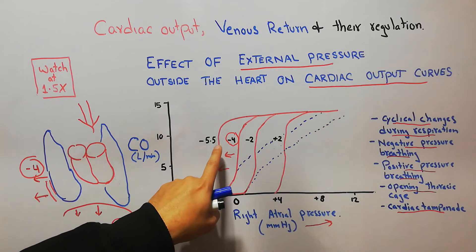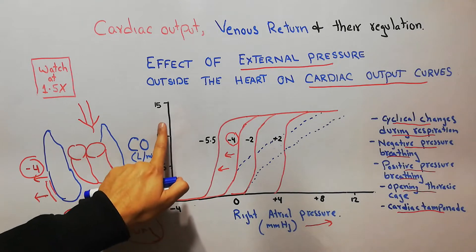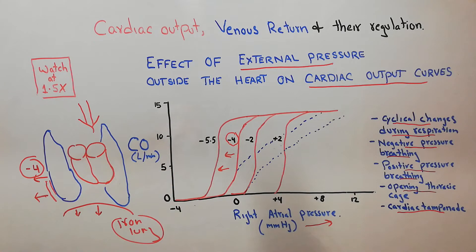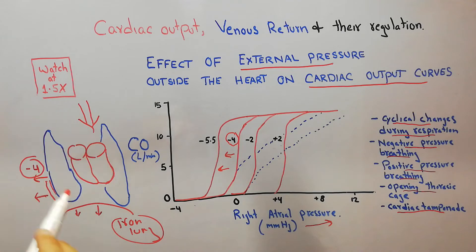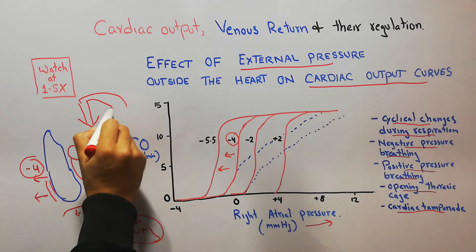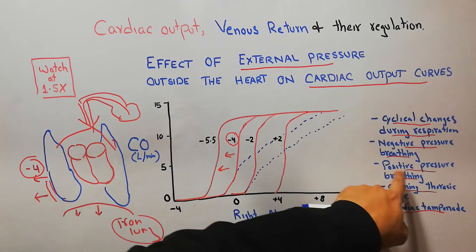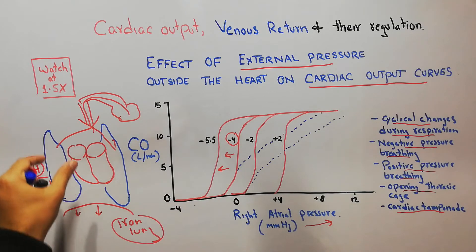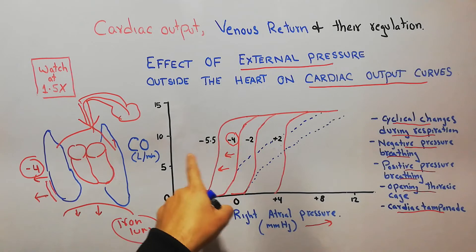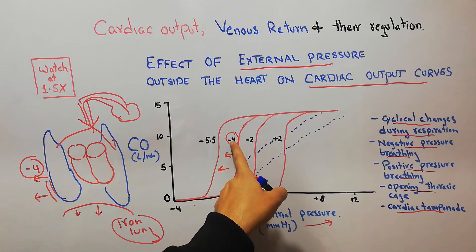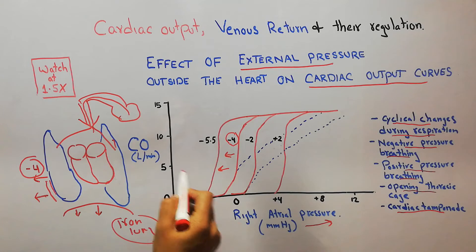When this curve shifts towards the left side, it means that even at a lesser pressure the cardiac output will increase more. Positive pressure breathing will increase the intrapleural pressure from minus 4 towards minus 2. With the decrease in intrapleural pressure from minus 4 to minus 5, the curve shifts towards the left side and there is more increase in cardiac output even at lesser pressure.